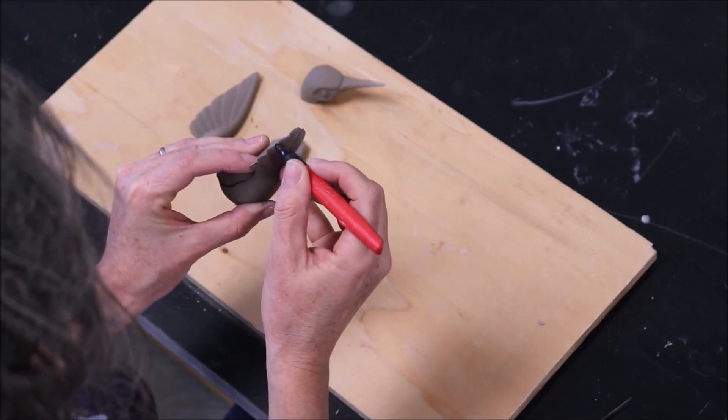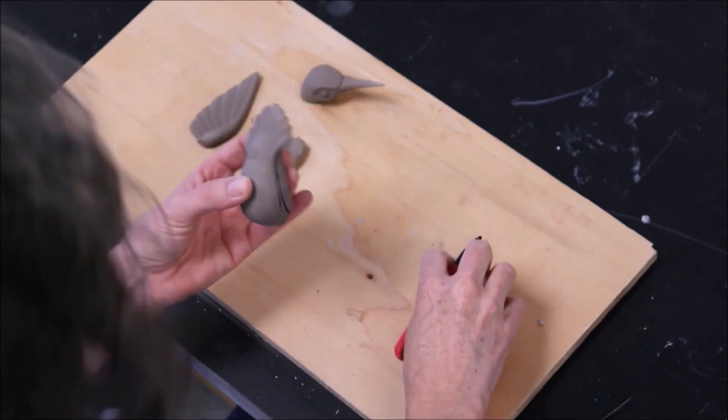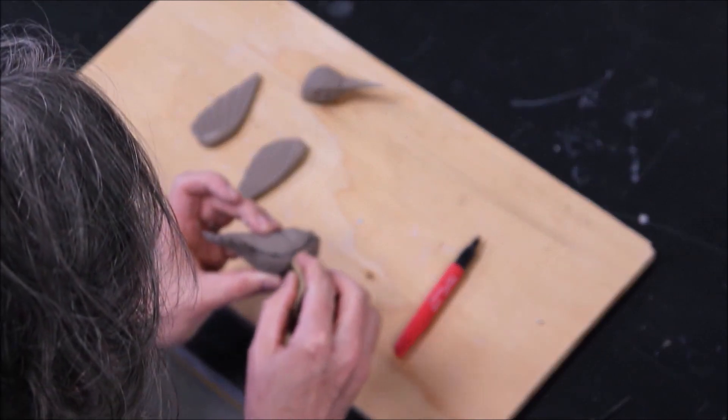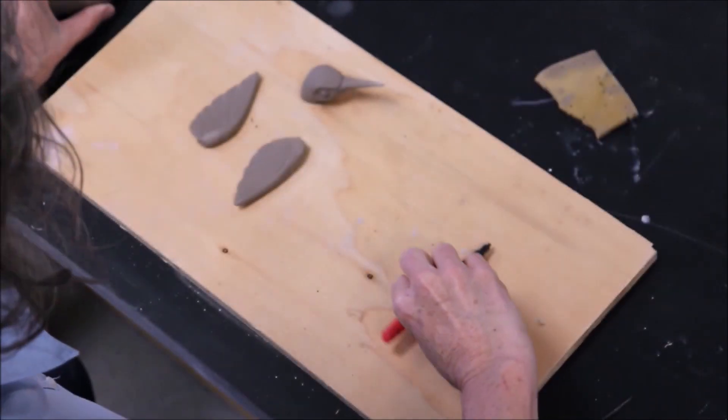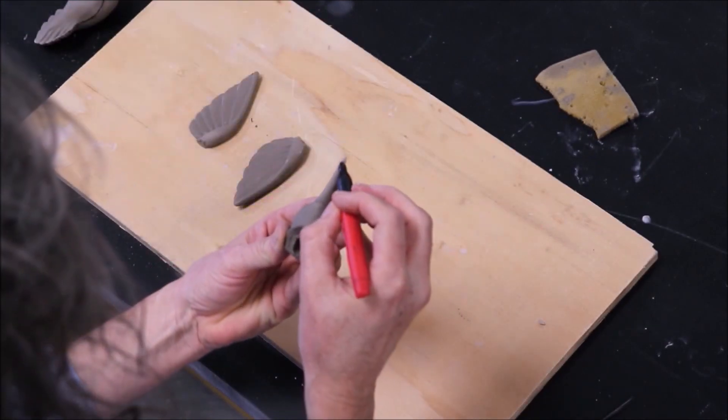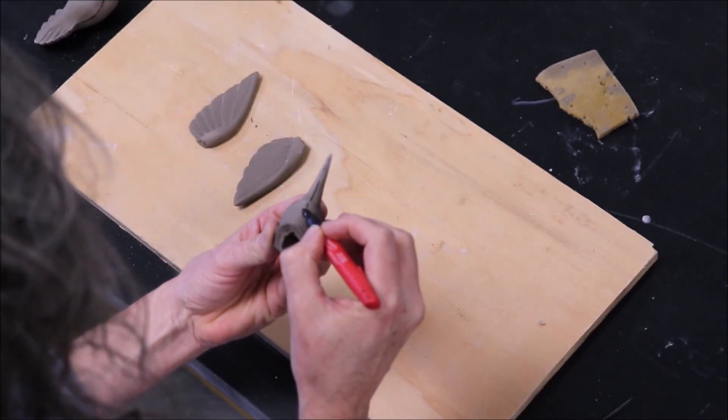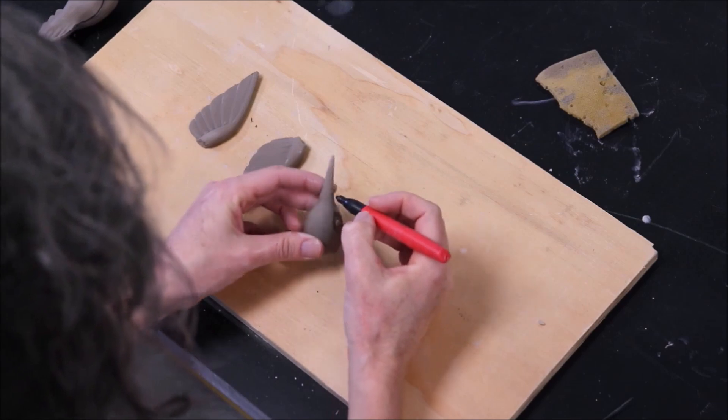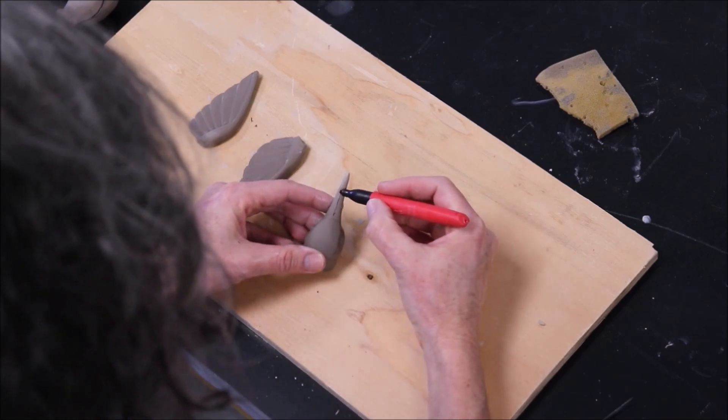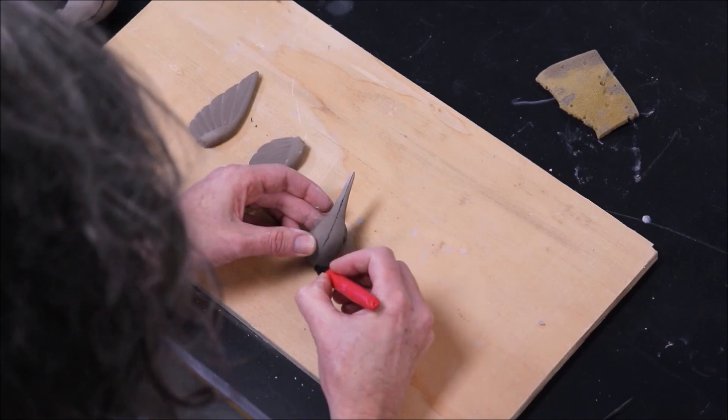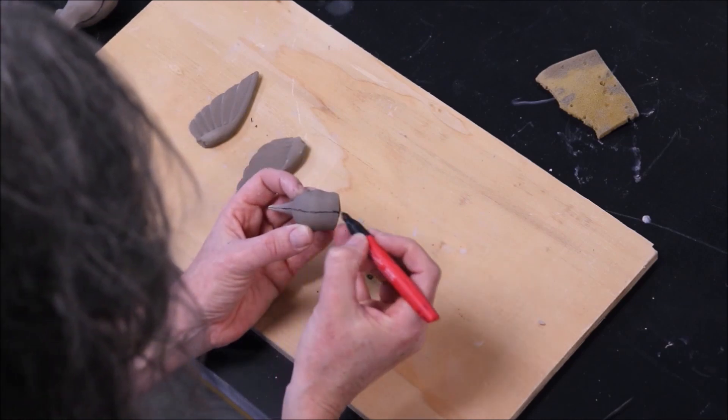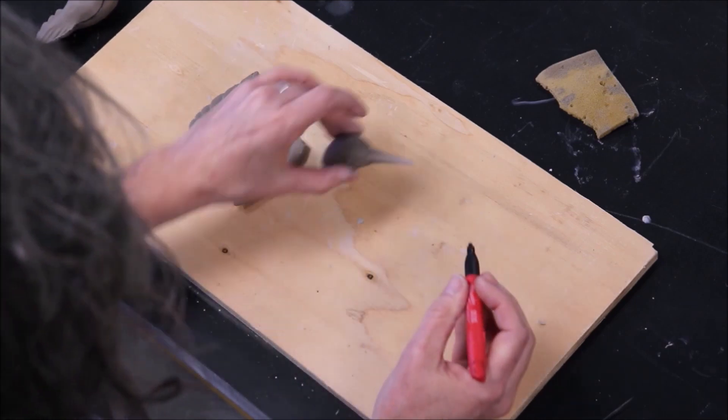What's great with having the head and wings separate is that when it comes time to slip cast the piece, I can reassemble it in lots of different ways. So I can make this bird look unique and individual because of the different positionings. With one mold, I can have several different birds that look different from one another.